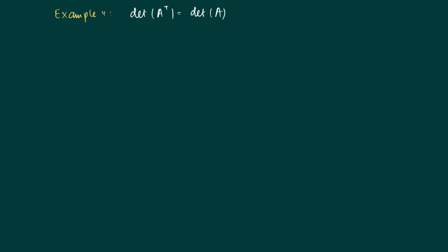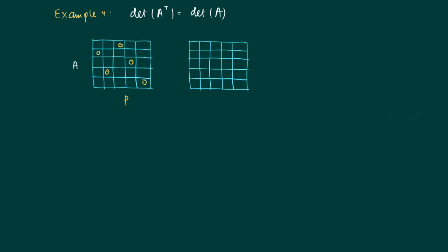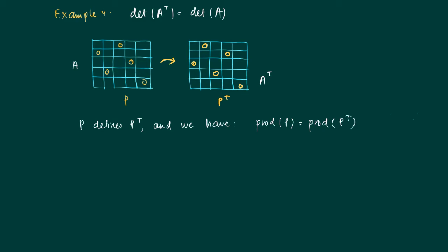Example four: if we have a square matrix and we transpose it so that columns become rows and vice versa, the determinant remains the same as the original matrix. If we consider matrix A and some pattern P, and we transpose the pattern, we are effectively working in the transposed matrix A^T. Pattern P defines a pattern P^T for the transposed matrix A^T. By swapping rows and columns, we pick the same elements from A^T as we had for A, so the product of P equals the product of P^T.